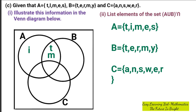Now we go to E. Is E found in set B? Yes. Is E found in set C? Yes. So E is going to be on the intersection of A, B, and C. So it's going to be here. We are done with E.